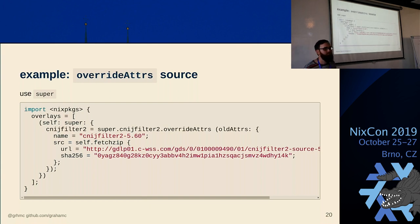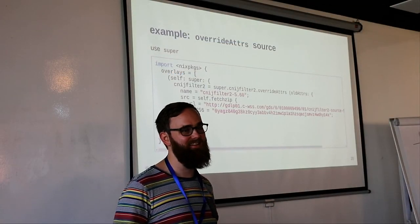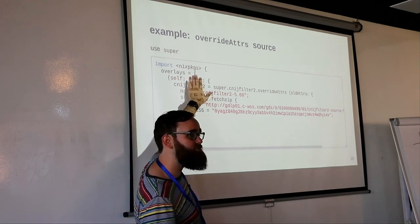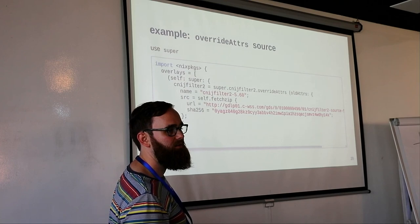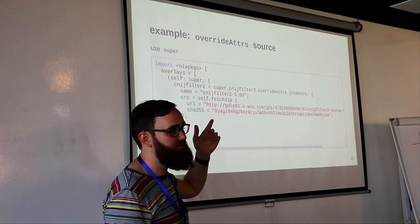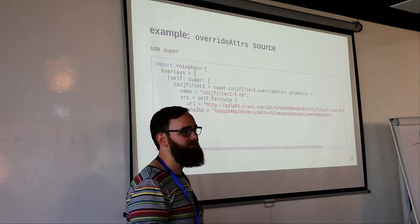Question about the overlay function signature: why is it written with two separate arguments self and super instead of an attribute set? Nicolas Pierron did it this way. There was some elegance in the implementation, but I think it's a mistake. With anonymous positional parameters, you could accidentally swap self and super and the code would still work but behave incorrectly. If it were an attribute set of self and super, you couldn't make that mistake.